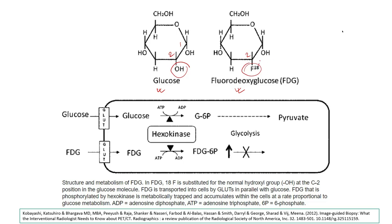This F-18 is a positron-emitting radionuclide that decays to the ground state by emitting a positron. This positron is used in positron emission tomography, where it annihilates with an electron and produces two high-energy gamma ray photons. These gamma ray photons are detected by PET cameras for image reconstruction.